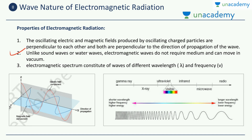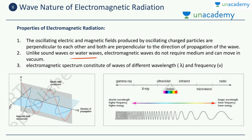The second property: electromagnetic waves do not require any medium and can move in vacuum. Sound waves and water waves require some kind of medium to transfer, but electromagnetic waves do not. That is the reason why light from the sun reaches the earth — even through vacuum, electromagnetic waves propagate without the presence of any medium.